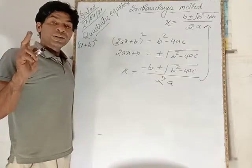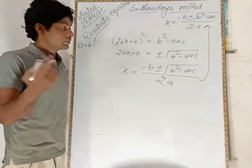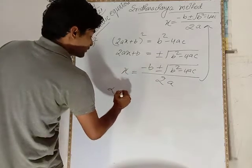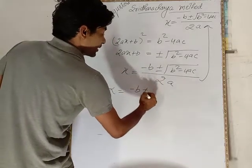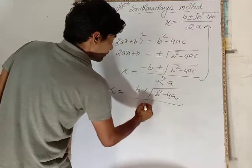Quadratic equation has two values, which we get from the plus value and minus value. Minus b plus root b² minus 4ac upon 2a, and minus b minus root b² minus 4ac upon 2a.